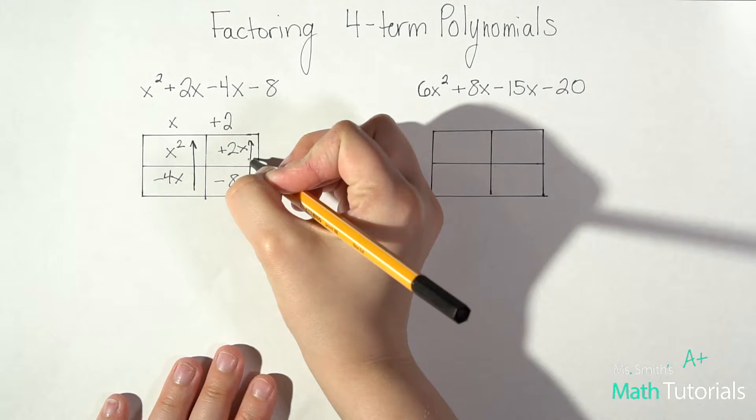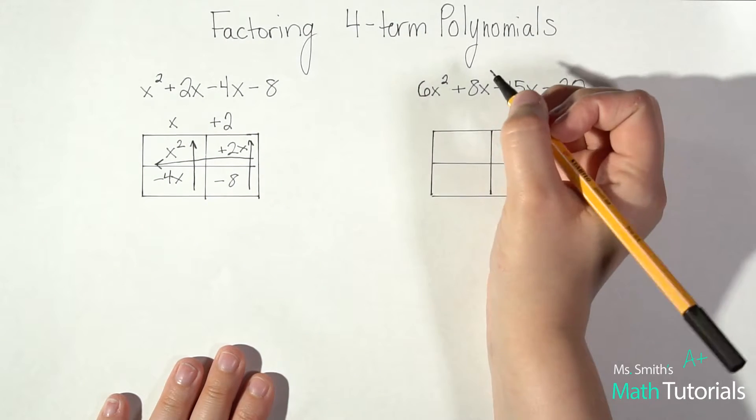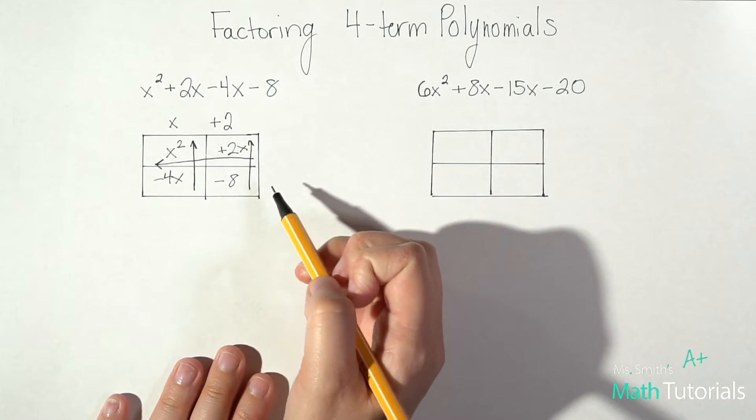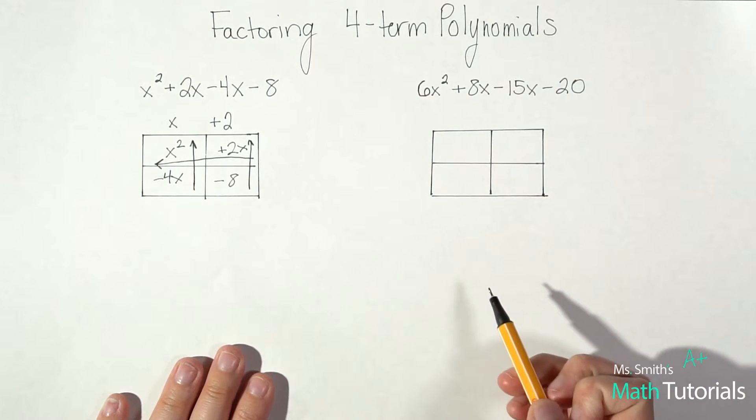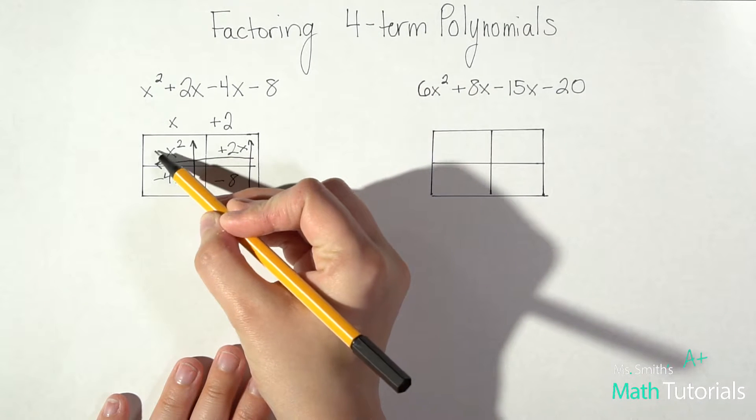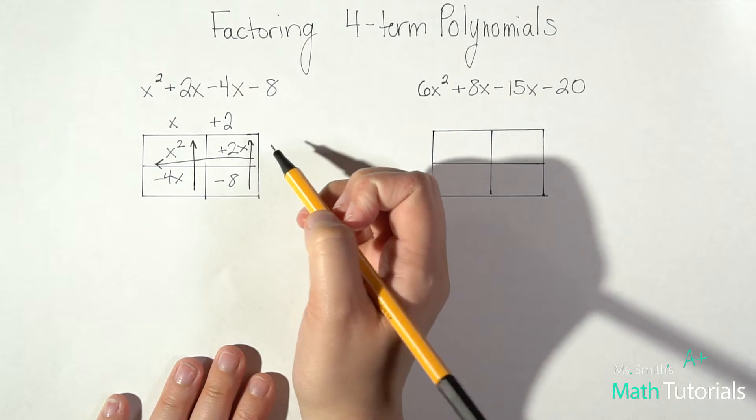So now we're going to come and we're going to do the side. We're going to move from right to left. So between x squared and positive 2x, what is our greatest GCF and we're going to write it out to the side. So in this case it's going to be positive because our leading sign is positive, and it'll just be an x.